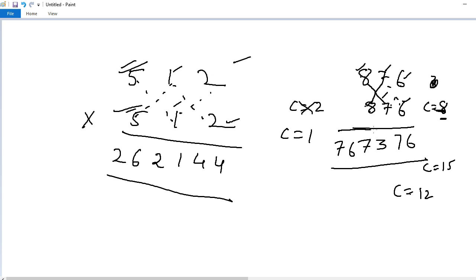767376. So within 30 seconds, you can find 1 to 1000 squares. It's a very easy and interesting Vedic mathematics technique. By practicing it, it's very very easy compared to traditional method. Thank you.